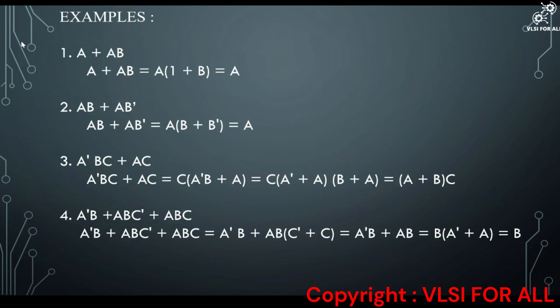Let us see some examples. First: A plus AB — taking A as common we get A(1 plus B). We know 1 plus B = 1, so the answer is A. Second: AB plus AB̄ — taking A as common we get A(B plus B̄). Since B plus B̄ = 1, A · 1 = A. Third: ĀBC plus AC — taking C as common we get C(ĀB plus A).